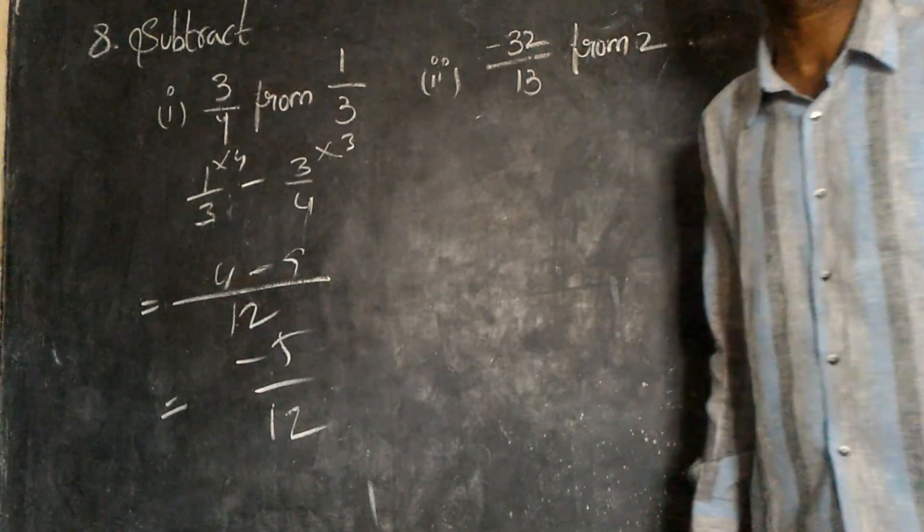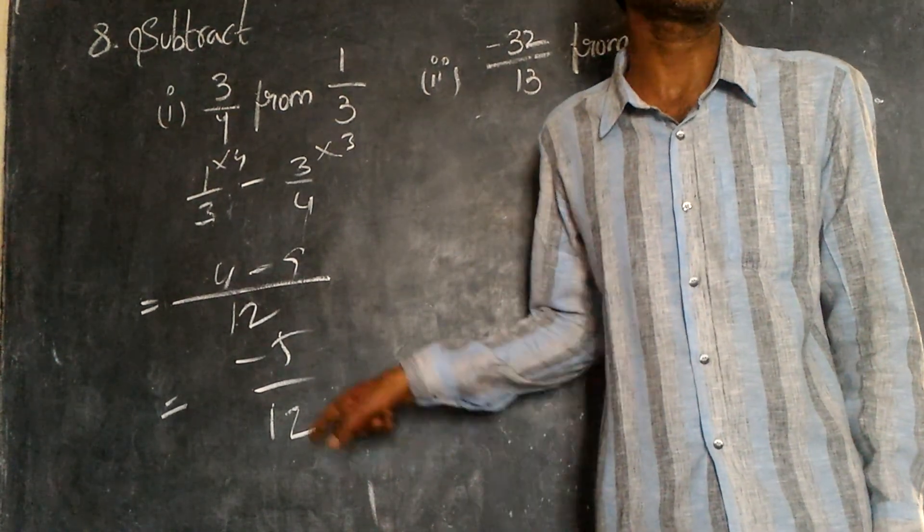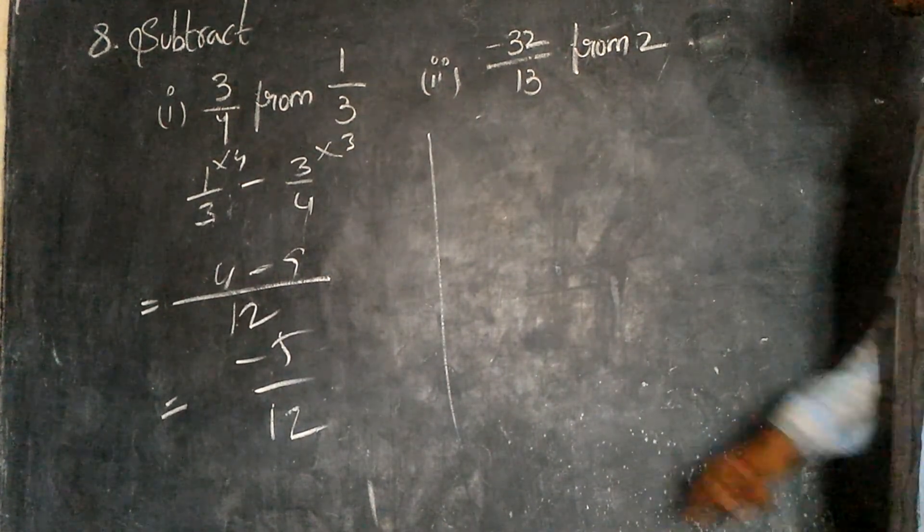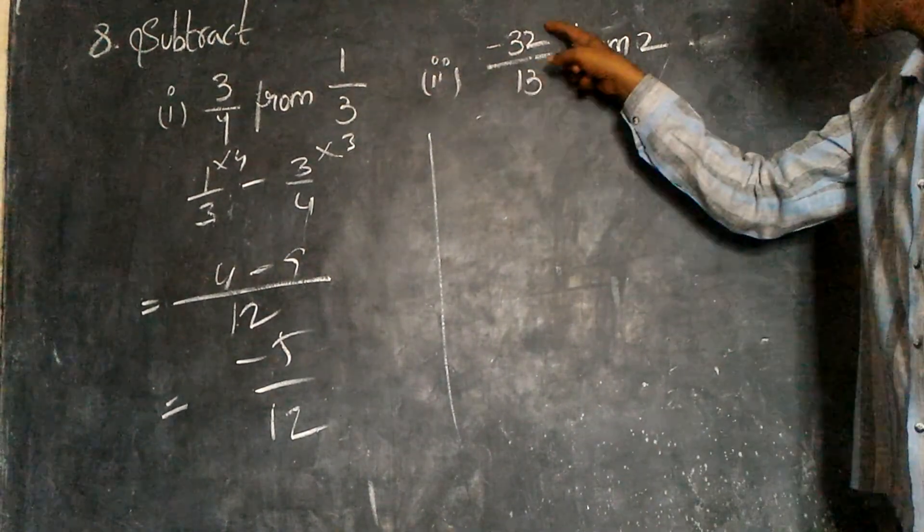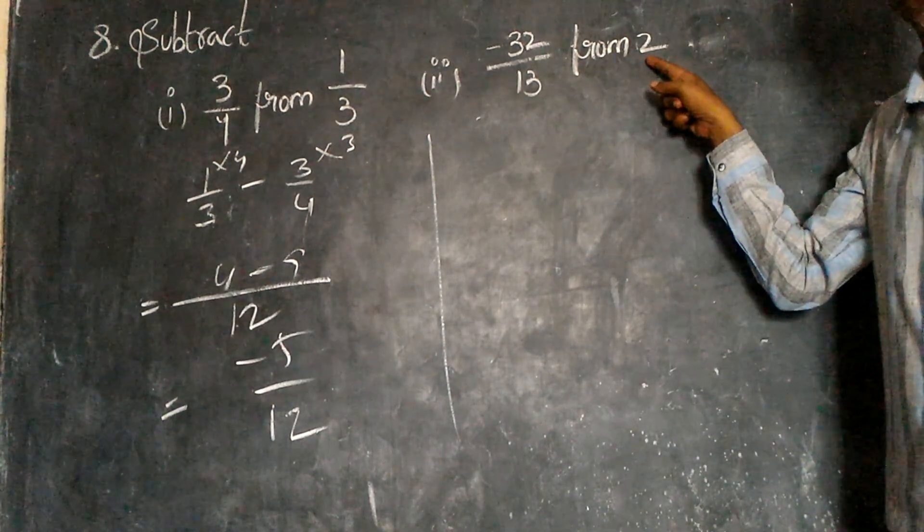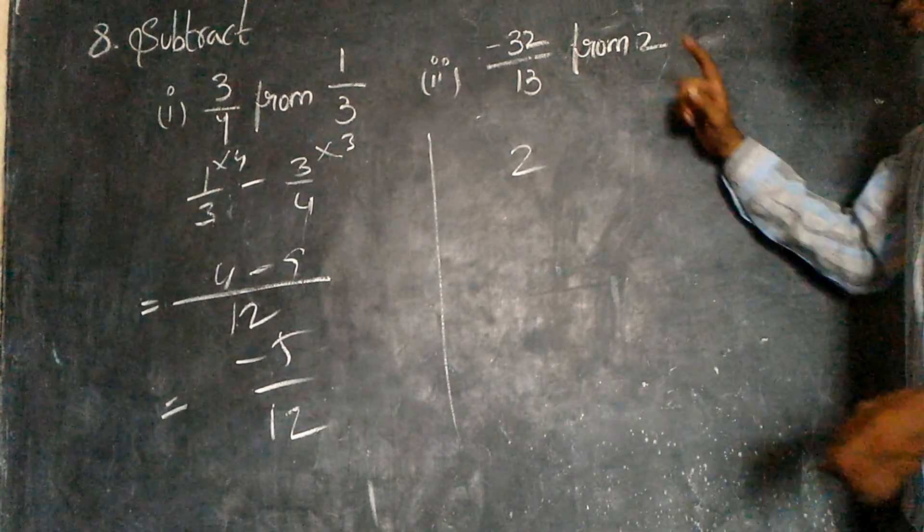Next problem: Subtract 32/13 from 2. Minus 32/13 from 2. From the given number, subtract.